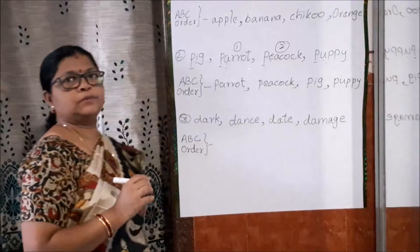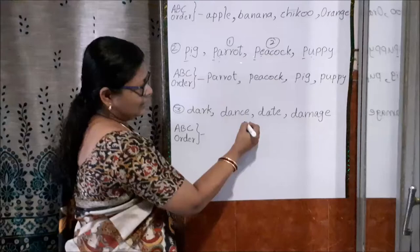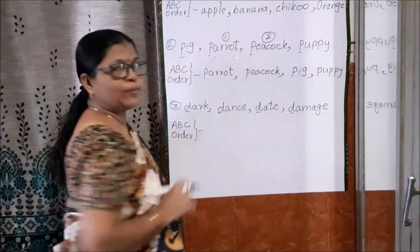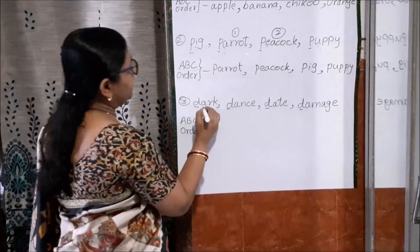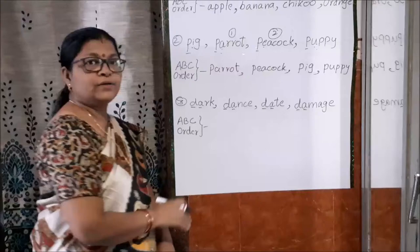Now the next one is, words given: dark, dance, date, damage. See here, D, starting D, everywhere same. Common letter is given. So we will move to the second letter. Move on to the second letter. Your A is given. Here also A is given. Here A is there. Here also A is given. So what to do now?